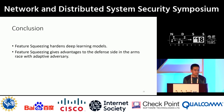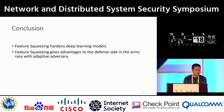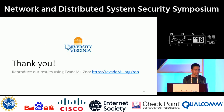In conclusion, feature squeezing hardens deep learning models by reducing the search space available to an adversary. It gives advantages to the defense side in the arms race with the adaptive adversary. You can read more details in our paper. Thank you for listening, and I'm ready to take your questions.